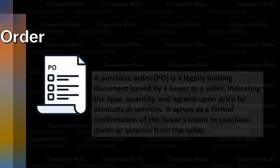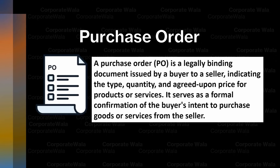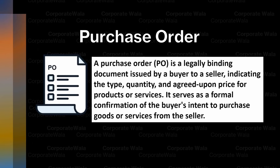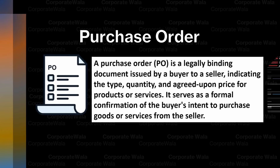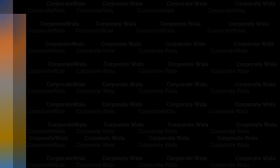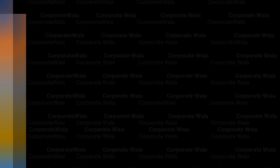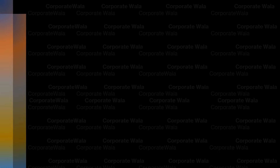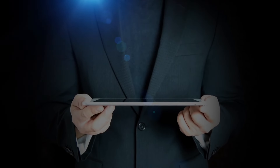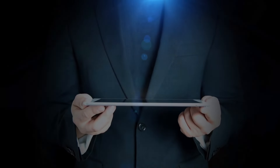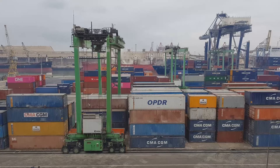Once approved, a purchase order is generated. This document specifies the items, quantity, agreed price, and the delivery dates. After this, the purchase order is sent to the selected vendor, who will fulfill the request and deliver the goods or services.